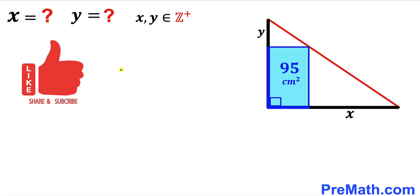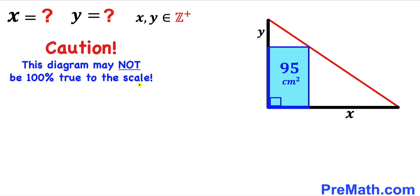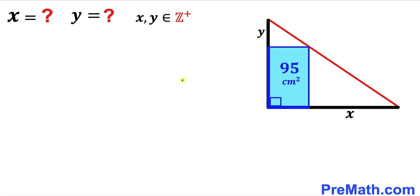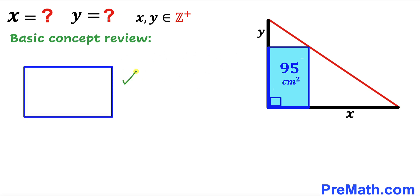Please don't forget to give a thumbs up and subscribe, and keep in mind that this figure may not be 100% true to scale. Before we proceed, let's go over some basic concepts. Let's focus on this blue rectangle — all angles in a rectangle are 90 degrees. Here's our main diagonal, and this diagonal divides the area of the rectangle into two equal parts.